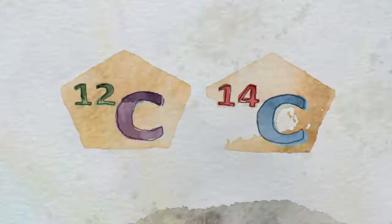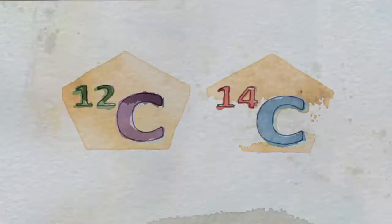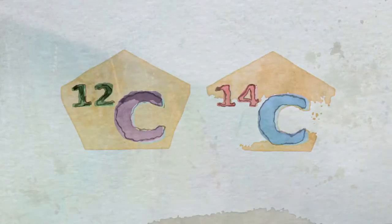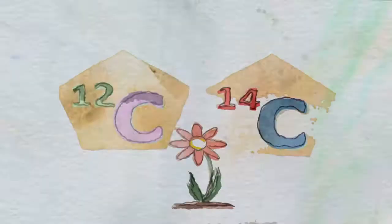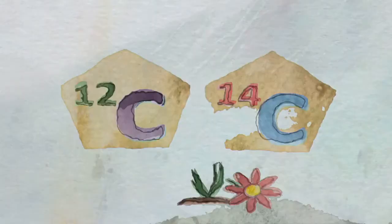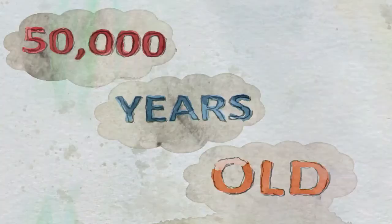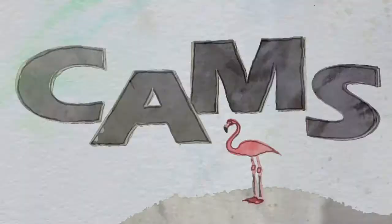In contrast, the C12 has remained constant in that material. So by measuring the ratio of 14C to 12C, we can measure how many years have passed since that animal or plant died. Carbon dating works for materials up to 50,000 years old, and for older things you'll need unstable elements with longer half-lives, which we also measure at the CAMS facility.